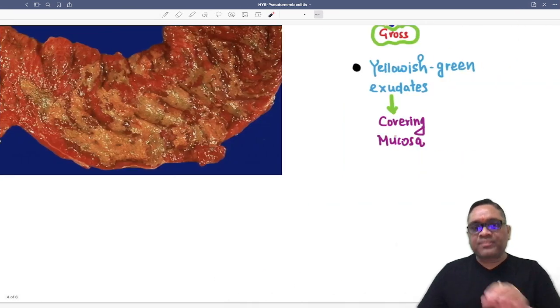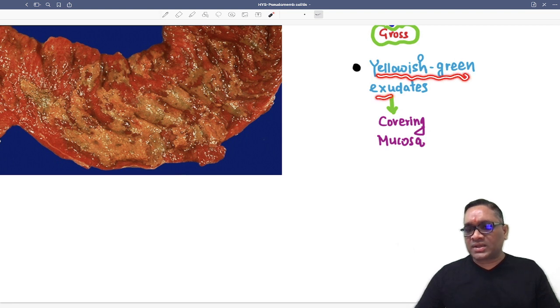In this, what we are going to see? On gross examination, you are going to see the yellowish-green exudates which is covering the mucosa. And mucosa can be hyperemic also.